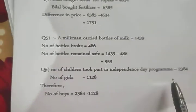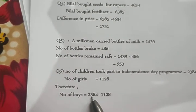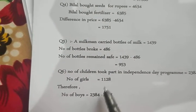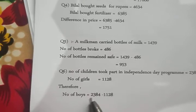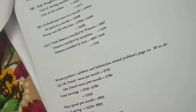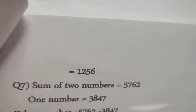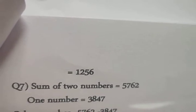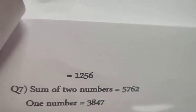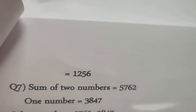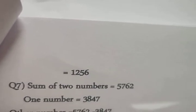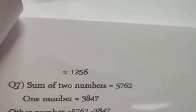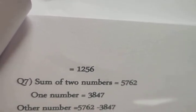The total number of children is 2384 and the number of girls is 1128; their difference is 1256. Therefore the number of boys who participated in the Independence Day program is 1256. Dear students, you can proceed the same way with the rest of the parts.